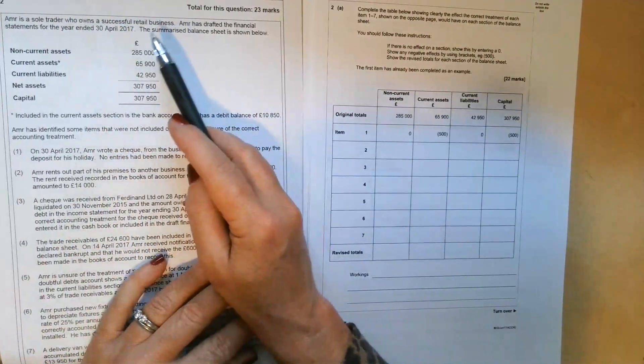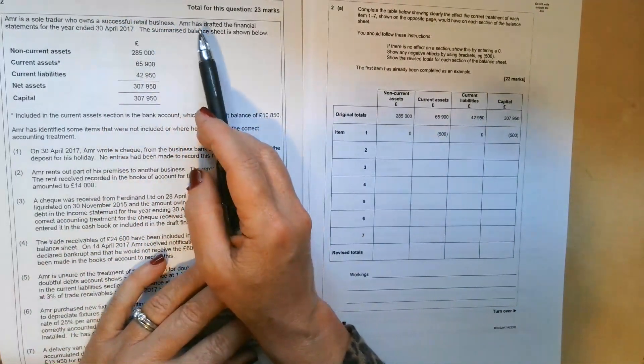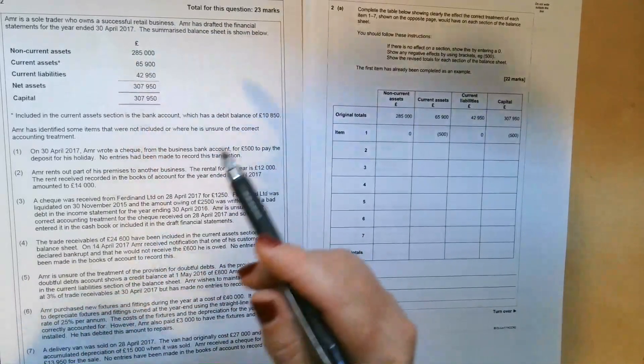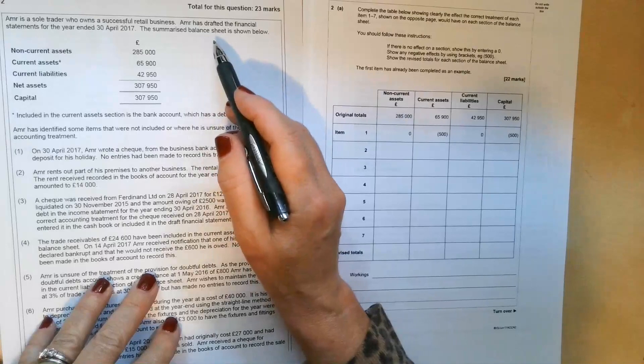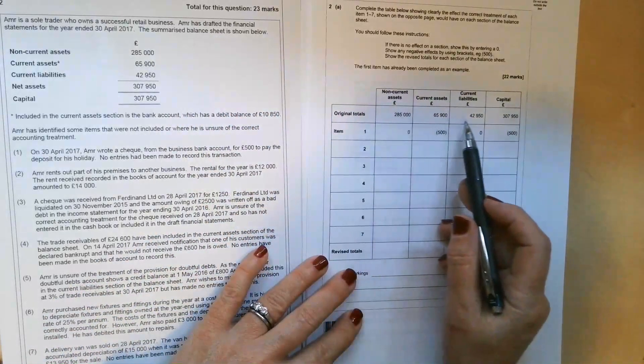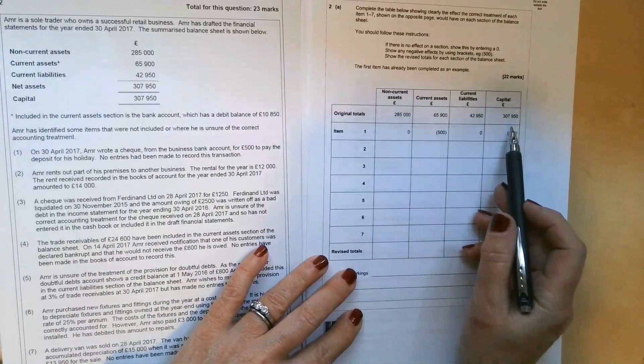So it says there that Amir is a sole trader who runs a successful retail business. He's drafted the financial statements for the year ended 30th of April 2017, and the summarized statement of financial position is shown below. And they've transferred all of those figures onto the answer grid there for you.